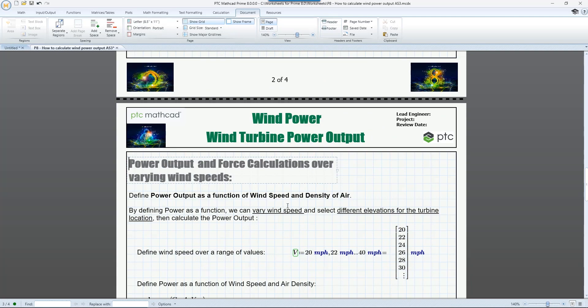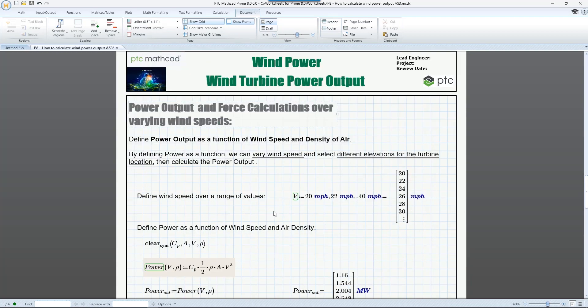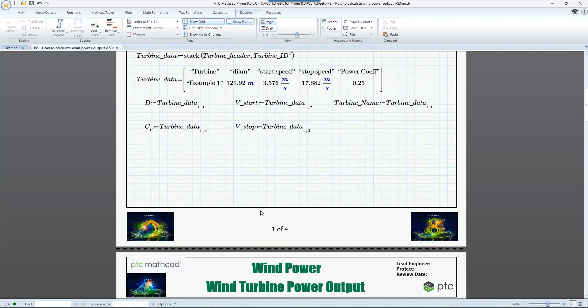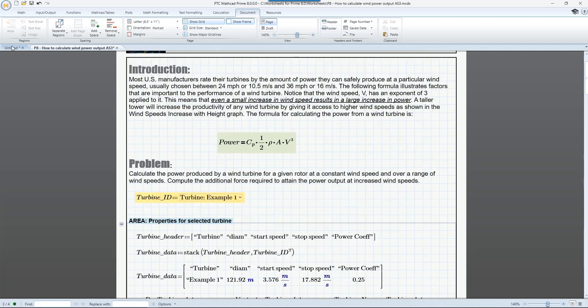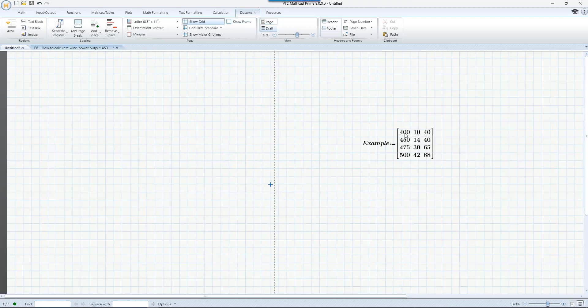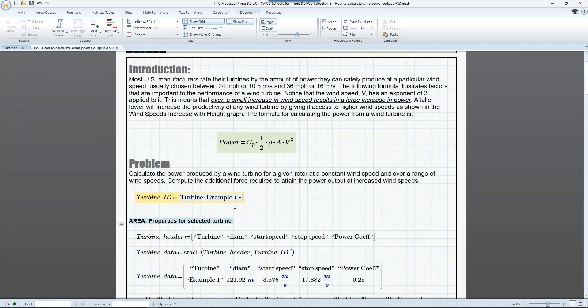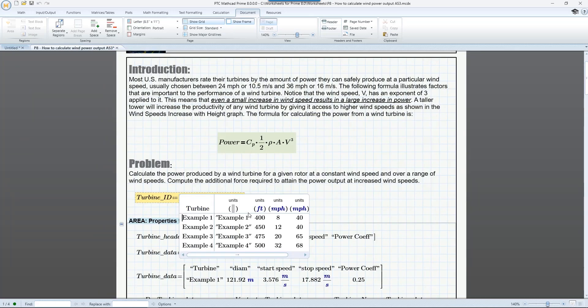And for the combo box input control, which we added in Mathcad Prime 7, multiple variable values can be defined for multiple variables. So in PTC Mathcad Prime 8, we have added the ability to copy-paste multiple variable values directly into the combo box edit mode.